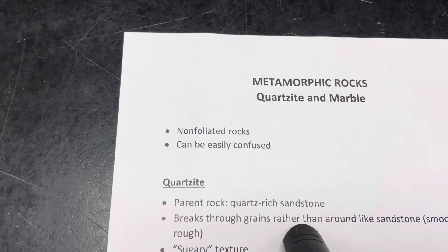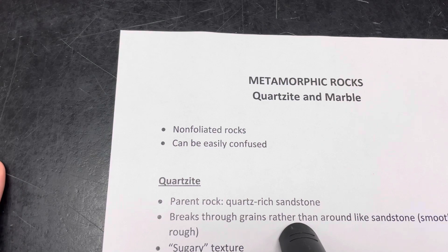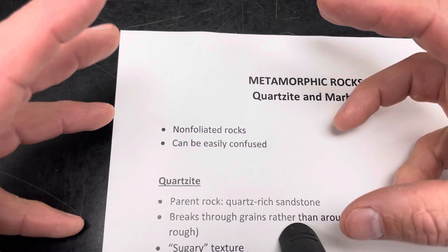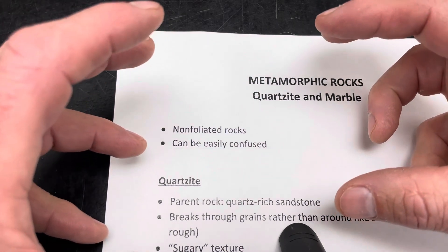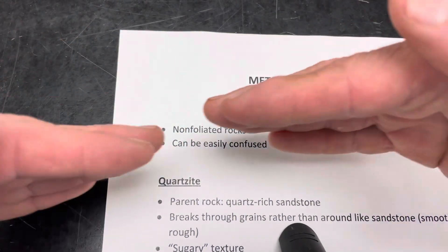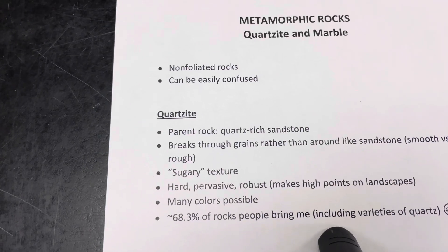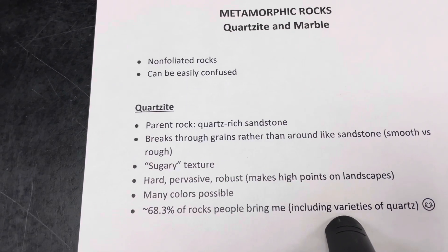We're going to be specifically looking at quartzite and marble — two somewhat similar-looking metamorphic rocks that can be easily confused. These are non-foliated rocks, meaning the rocks have been compressed and heated by higher temperatures, but they do not have the layering for the most part that we see in foliated metamorphic rocks. The pressures imparted on these rocks have not produced a planar arrangement of minerals, or what we call foliation.